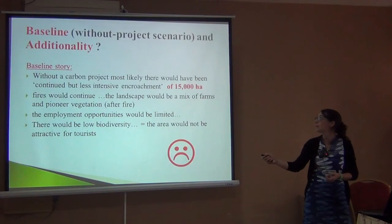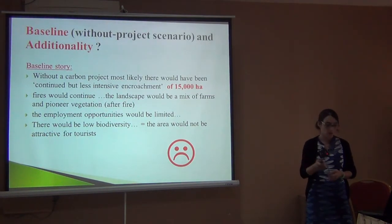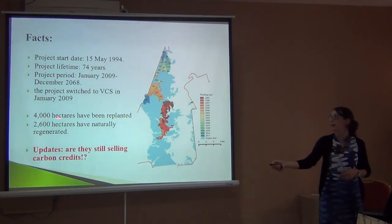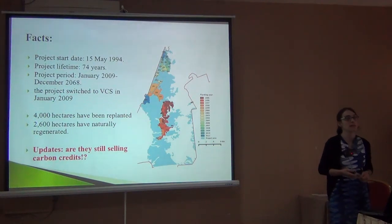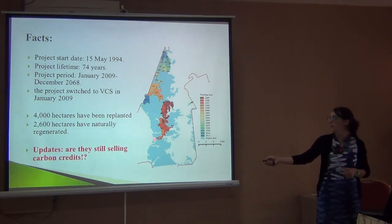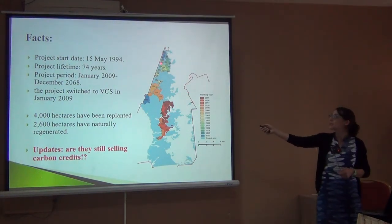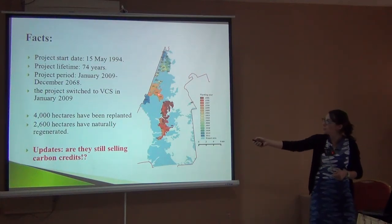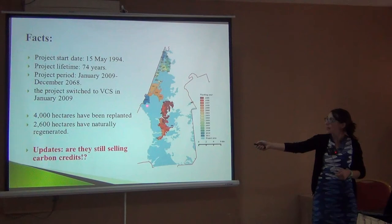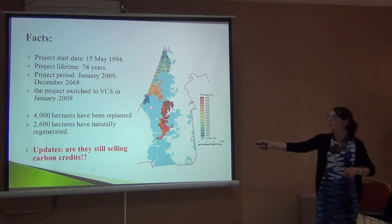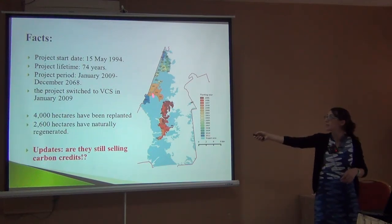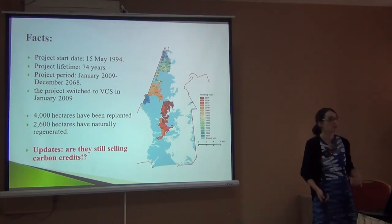Of the 1,000 hectares planned for the carbon project area, they've already planted 4,000 and 2,600 have naturally regenerated. It was very smart that in the beginning they planted in the middle, creating a corridor between the two areas. Then they decided to start planting at the edge, because birds and monkeys move from one side to the other — so the land in the middle, without much investment, gets seeds dispersed by the wildlife, is protected from fire, and slowly regenerates as well into forest with less investment.